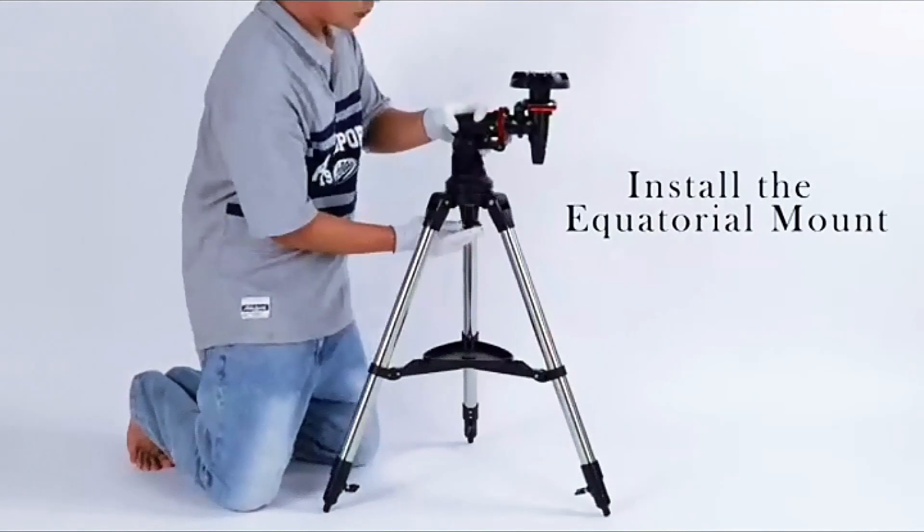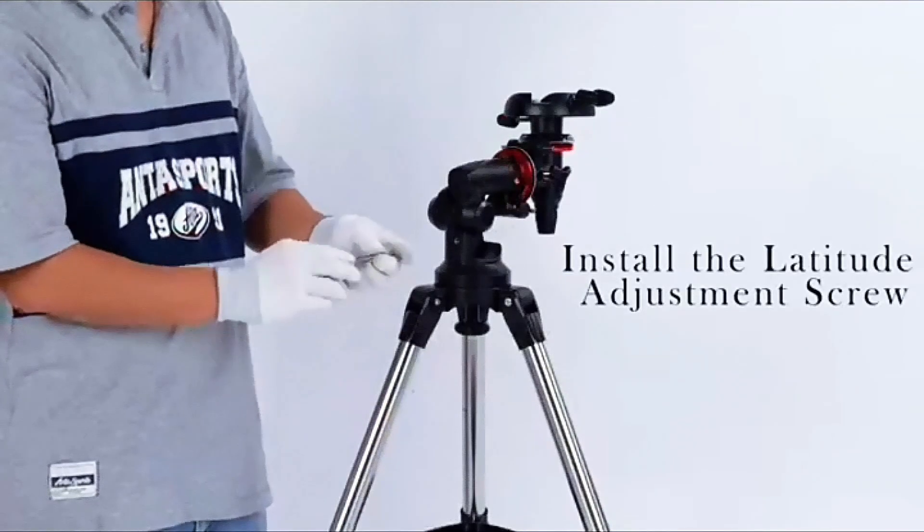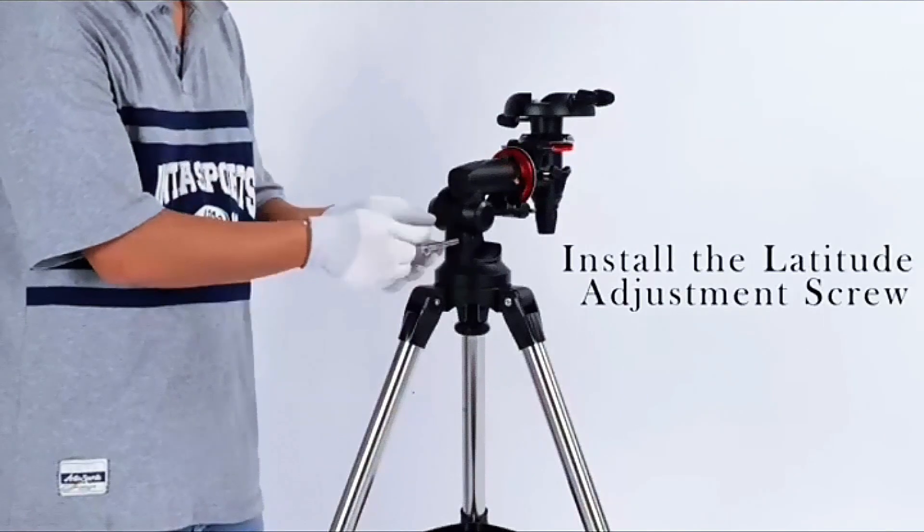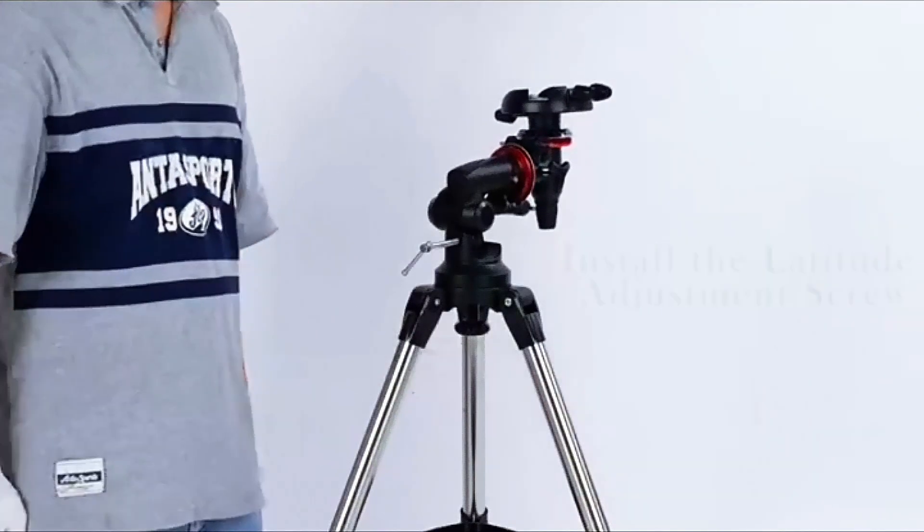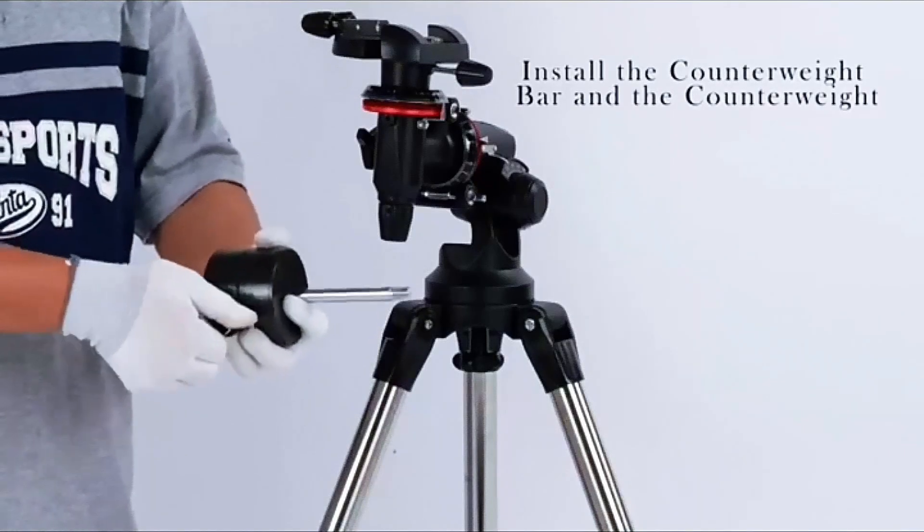Stable Tripod. Comes with an adjustable, sturdy stainless steel tripod that offers superior stability, minimizing any unwanted shake. Our telescope for adults can be adjusted to the optimum height for comfortable viewing and enhanced clarity when stargazing.